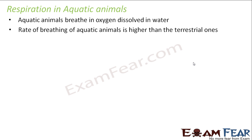Can you guess why? Terrestrial animals — that means animals which live on land, for example human beings — we breathe in oxygen from air into our lungs. We have these organs called lungs inside our body, which are used for absorption of oxygen. Moreover, the amount of oxygen present in air is more, whereas the amount of oxygen present in water is comparatively lesser. If the amount of oxygen present is lesser, we will have to breathe very frequently to take in more and more oxygen. That is why the rate of breathing of aquatic animals is higher than the terrestrial ones.